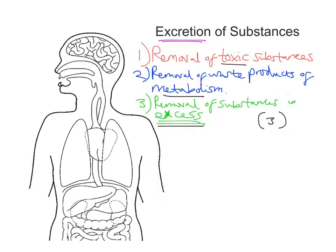Just to say, this is not the same as egestion. The removal of faecal material — undigested material — isn't really the same and doesn't fit with this definition. We're not removing something that's toxic, it's not a waste product of metabolism, and it's not a substance in excess. So technically the release of faecal material from the body is not classed as excretion. That's why when we think about excretory organs, we don't refer to anything to do with the bowel.